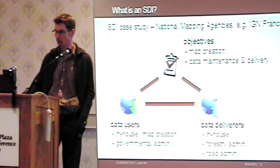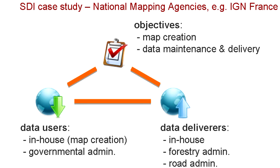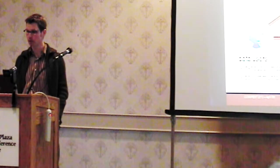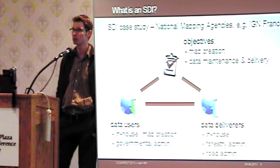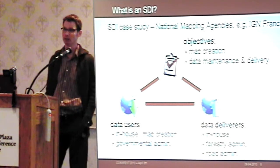Here are three case studies. First, national mapping agencies like IGN France have a spatial data infrastructure. The objective of IGN is to create maps, maintain and create data, and deliver it to customers. Customers include in-house map creators, governmental administrations, and people working on environmental aspects. They have data deliverers including a large in-house department — around 150 people who drive over France daily to update data — and they also receive data from the forestry administration and road administration.